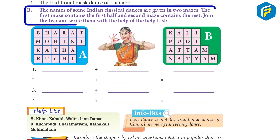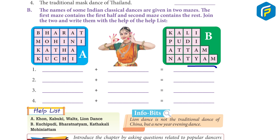The names of some Indian classical dances are given in two mazes. The first maze contains the first half and the second maze contains the rest. Join the two and write them with the help of the helpbox.